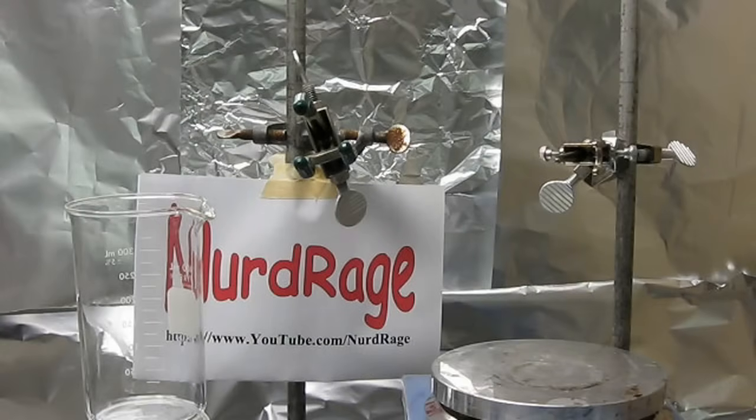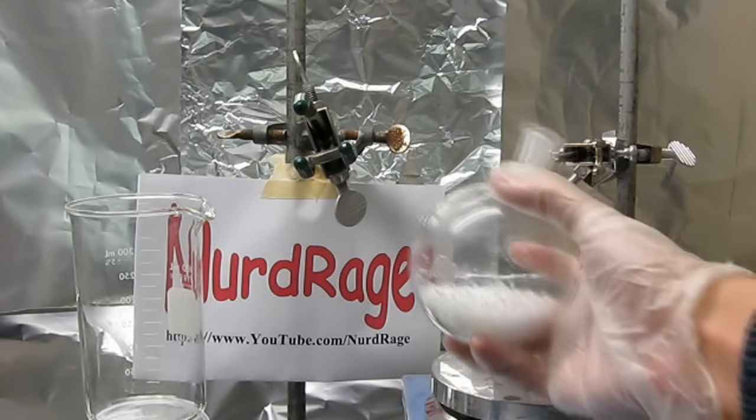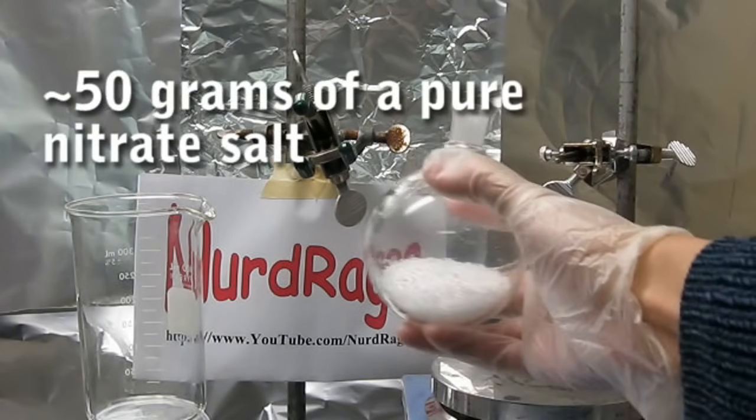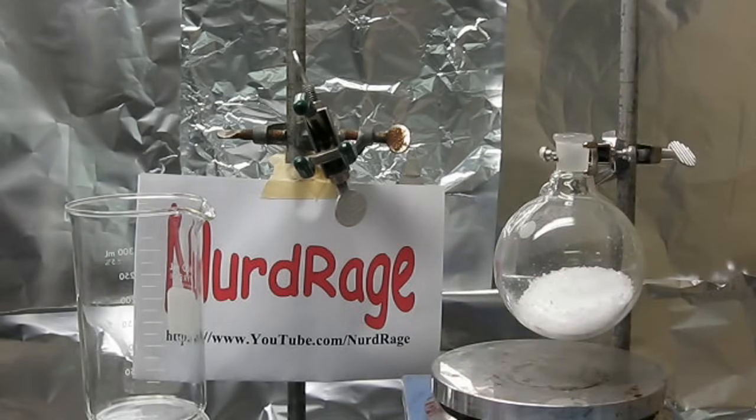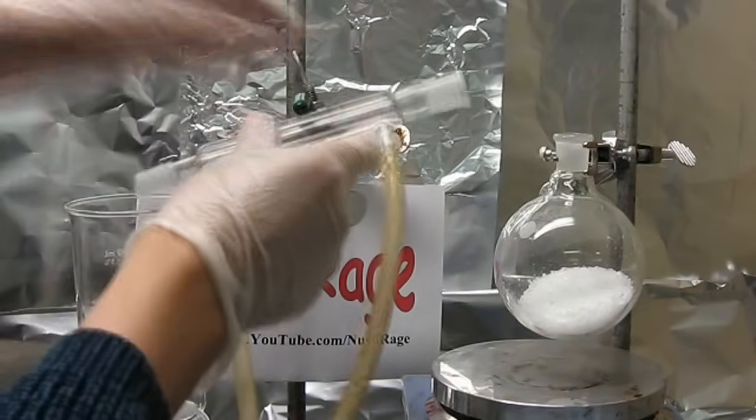In this final method we're going to make nearly pure nitric acid. First get a round bottom flask and fill it with about 50 grams or so of a pure nitrate salt. Do not use impure fertilizers for this.